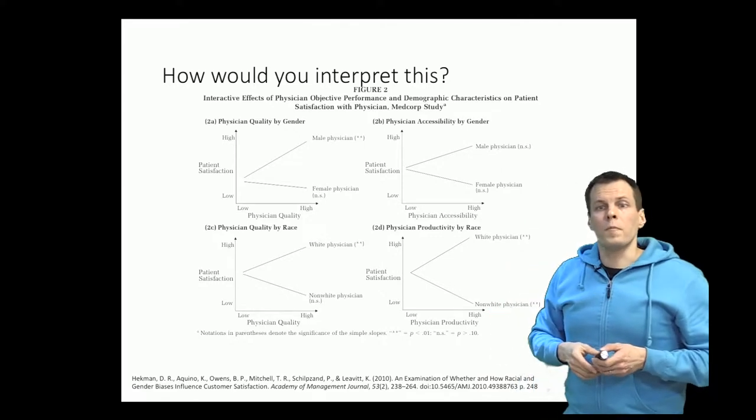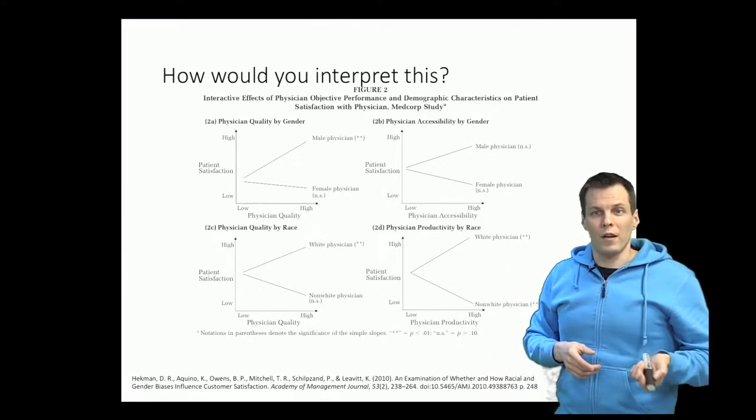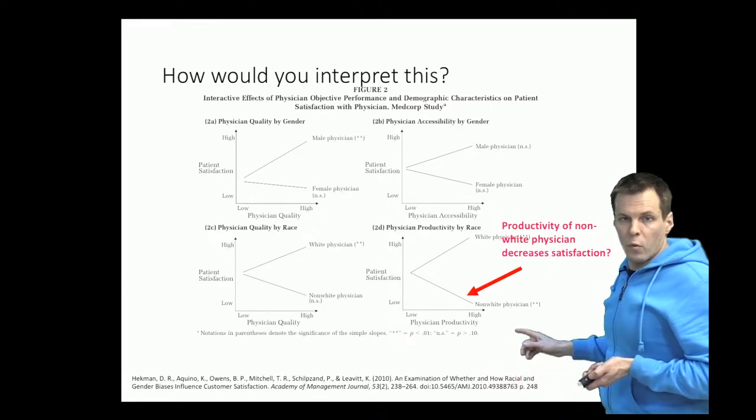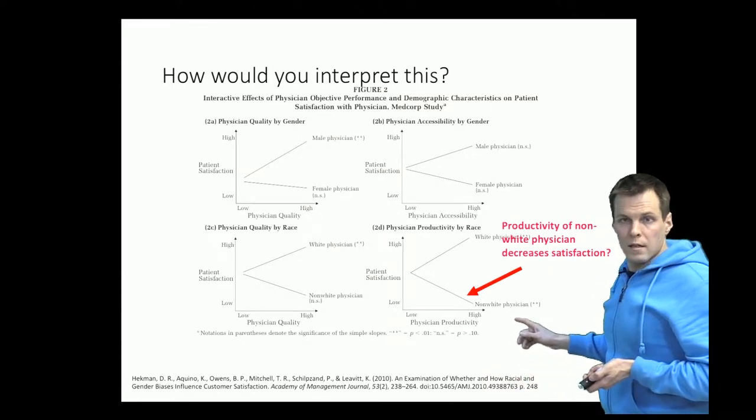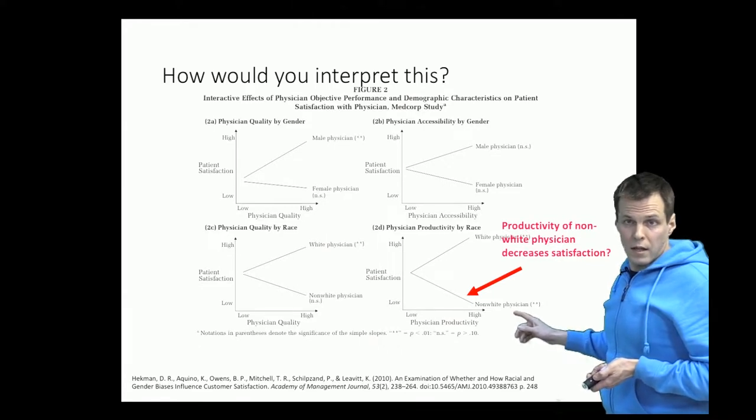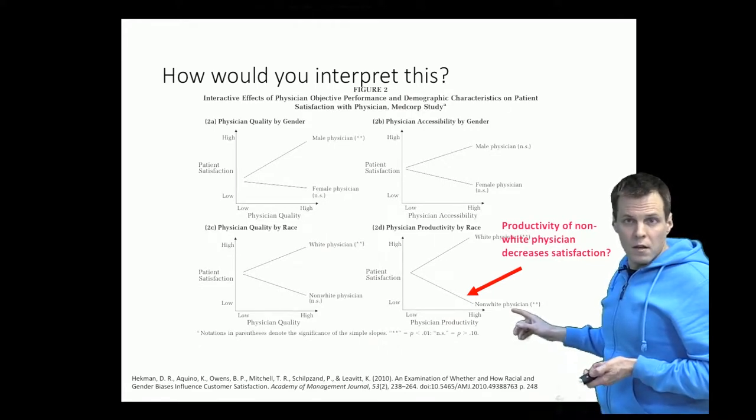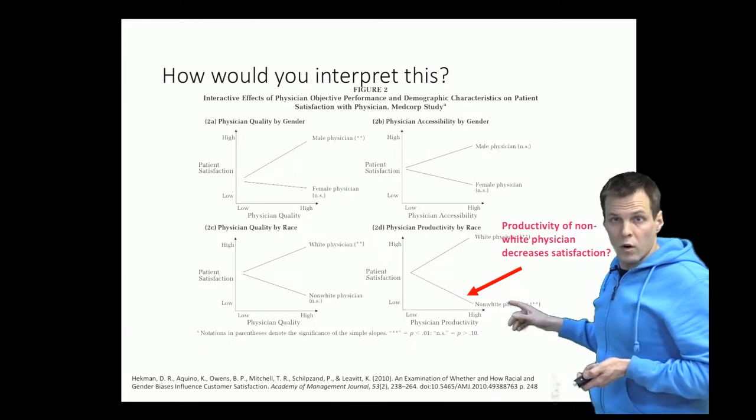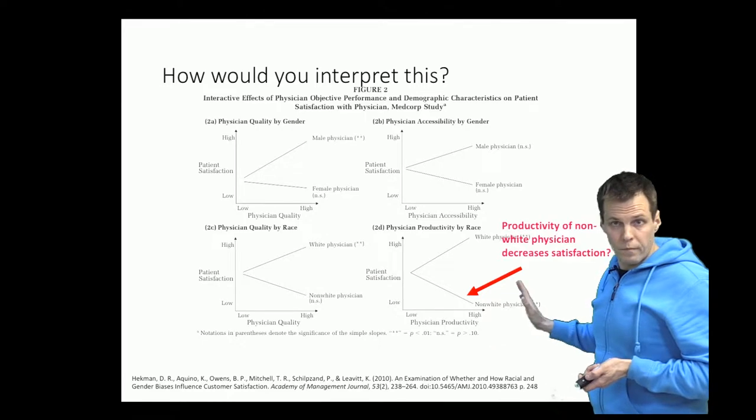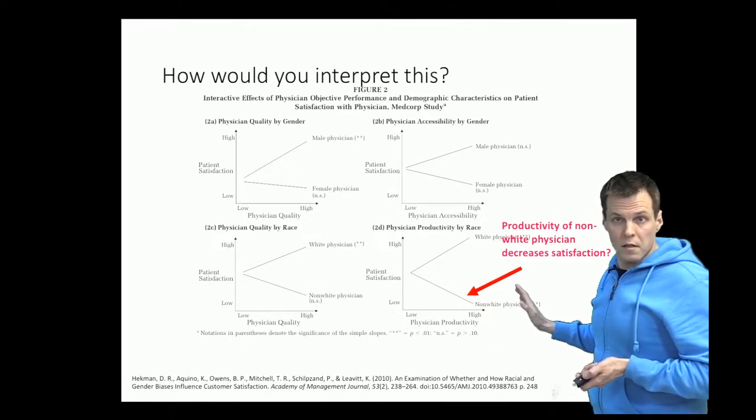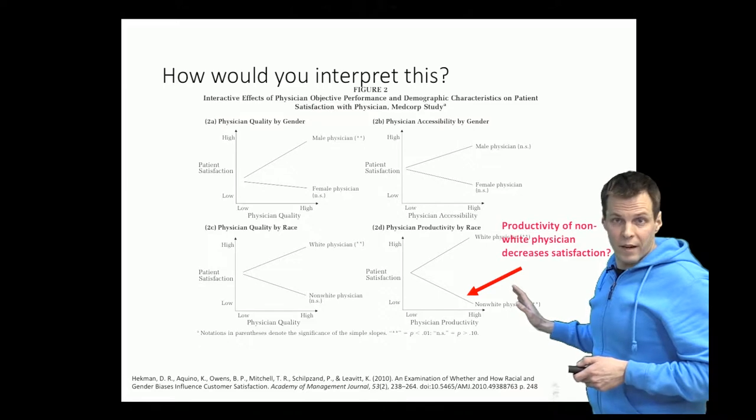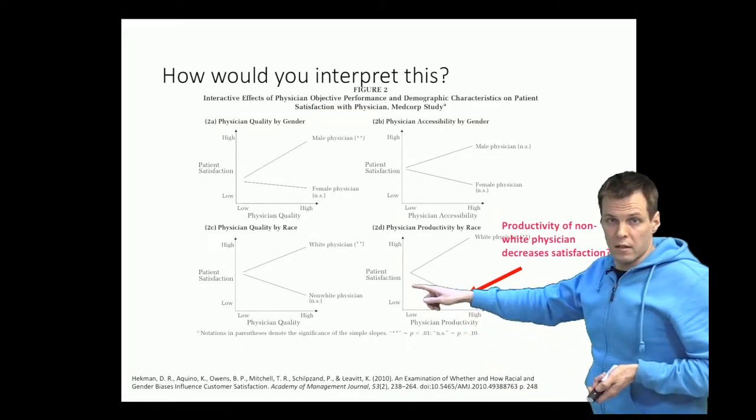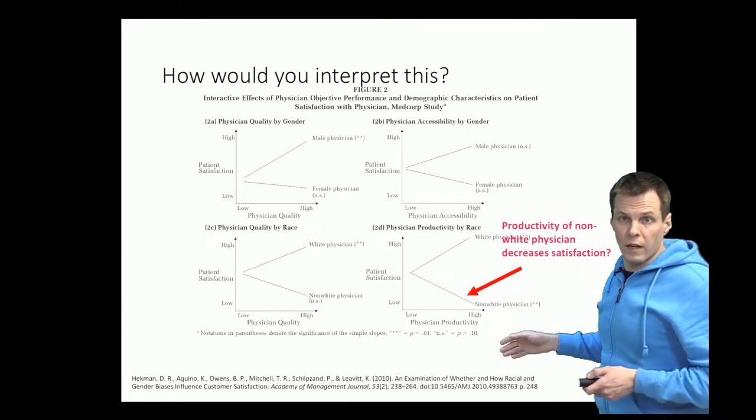There is also a bit weird results here. So we have this result that for non-white physicians, physician productivity actually decreases satisfaction. My guess for this result is that this is a result of an outlier. They only had 13 non-white physicians in the sample. So that's very little. So it could be that there is one observation that tilts this regression line down. We don't know because we don't have the data.